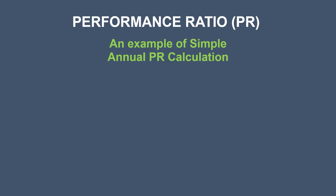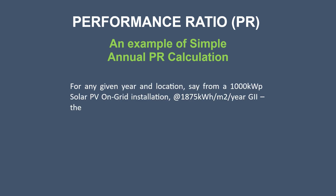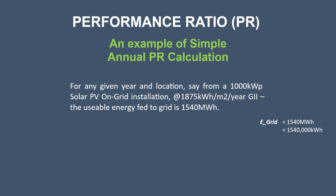Now let's look at an example of how to calculate simple annual PR with available plant operational data. For any given year and location, from a 1000 kWp solar PV on-grid installation, the annual global irradiance received at the PV plane is 1875 kWh per meter square per year, and the usable energy fed to the grid is 1540 megawatt hours. So E-grid is 1,540,000 kWh per year, GII is 1875 kWh per meter square per year, and PNOM-PV is 1000 kWp.